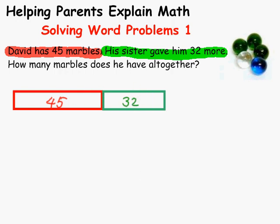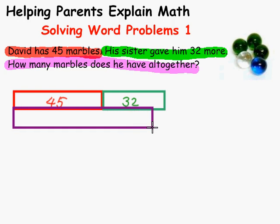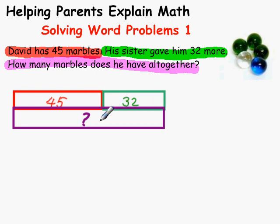That's important. And now the question asks: how many marbles does he have all together? So where would we put that thinking block? It's all together, so we put it down here. Now the whole problem is clear. What do we need to work out? We need to work out the all together. So it is clear that we have to add 45 to 32 to get our answer.